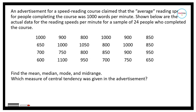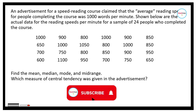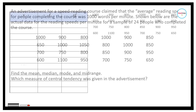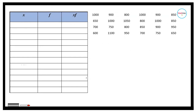Now let's consider this problem: an advertisement for a speed reading course claimed that the average reading speed for people completing the course was 1,000 words per minute. Shown below are the actual reading speeds for a sample of 24 people who completed the course. Find the mean, median, mode, and mid-range, then determine which measure of central tendency was given in the advertisement.